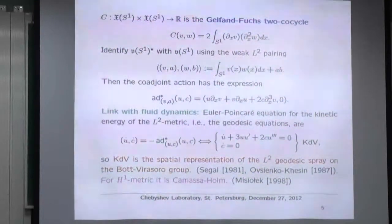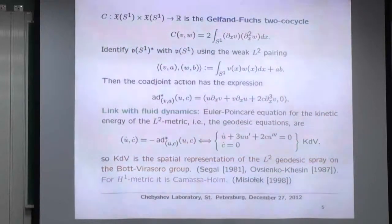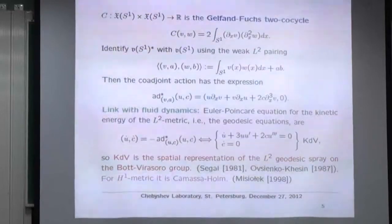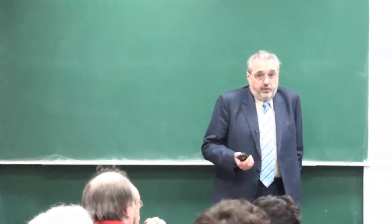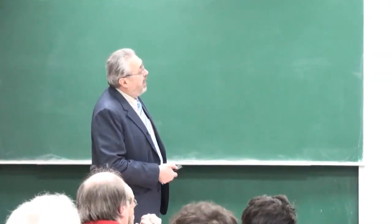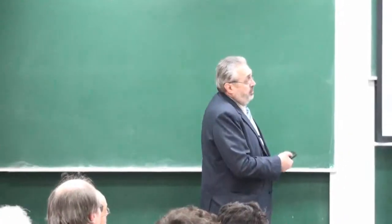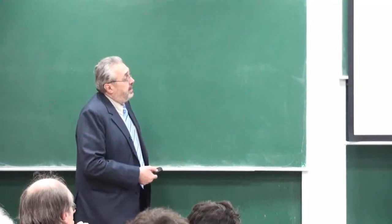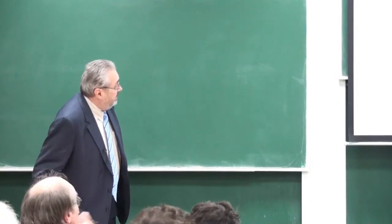I compute the coadjoint action, and therefore I know what the geodesics are. The geodesic equations involve ad* (not ad, which would be zero). What you get is: ṁ = −ad*_ξ m, and this is just the Korteweg-de Vries equation. KdV is nothing but the spatial representation of the geodesic flow of the weak L² metric, exactly as Arnold told us the Euler equations are the spatial representation of the L² metric on the diffeomorphism group. If you change L² to H¹, you get Camassa-Holm.